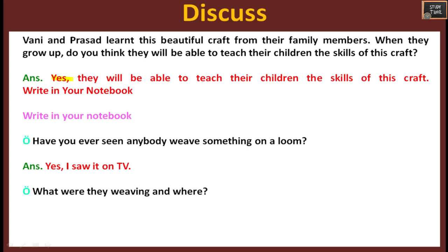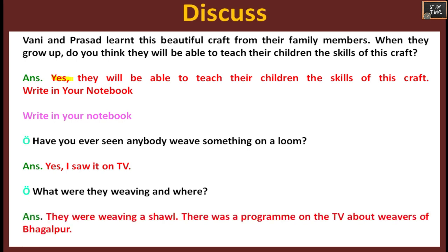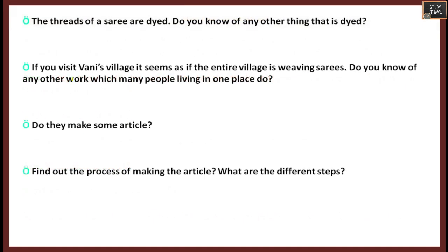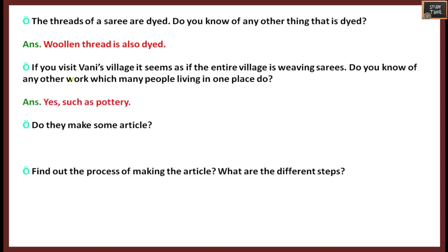Write in your notebook: Have you ever seen anybody weave something on a loom? Write yes and where you saw it, what they were weaving — for example, a shawl or sari. Next question: the threads of a sari are dyed — do you know of any other thing that is dyed? Woolen thread is also dyed. If you visit Vani's village, the entire village seems to be weaving saris. Do you know of any other work which many people living in one place do? You can write any other work, like pottery.